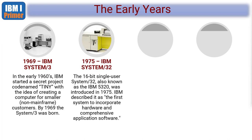Wind forward about five years to 1975, when the IBM System 32 was released. This was a 16-bit single-user system, also known as the IBM 5320. IBM described this as the first system to incorporate hardware and comprehensive application software — which is kind of what we're still doing on modern machines. Everything bundled together into one box.